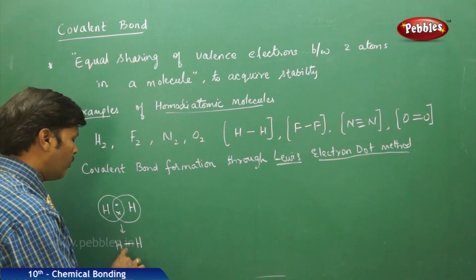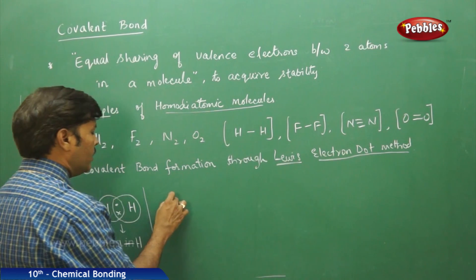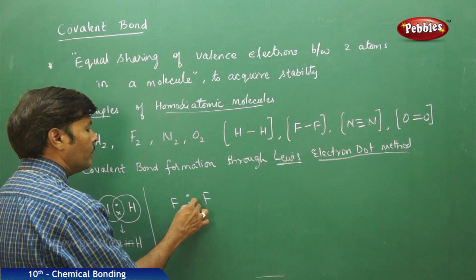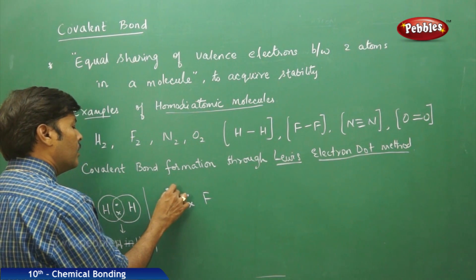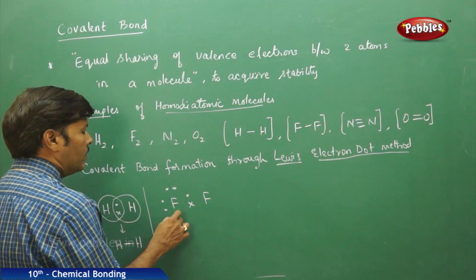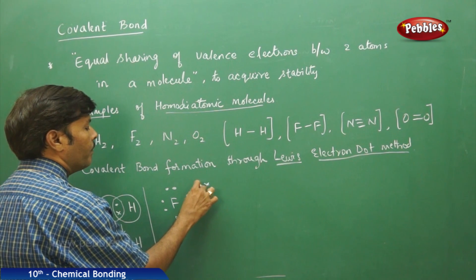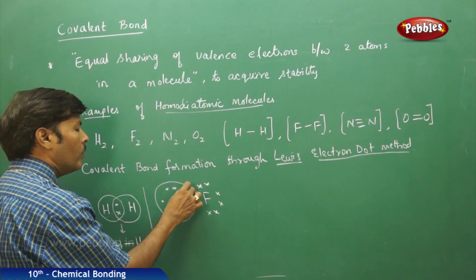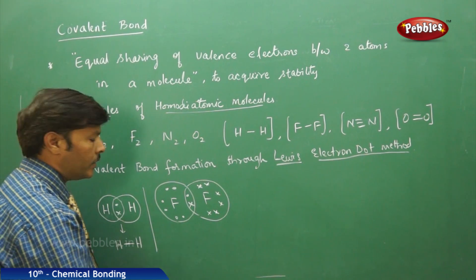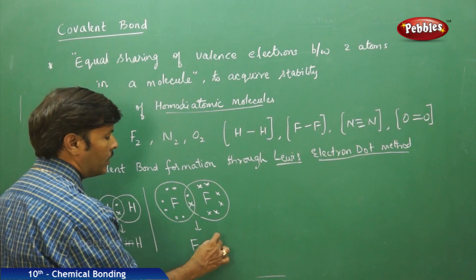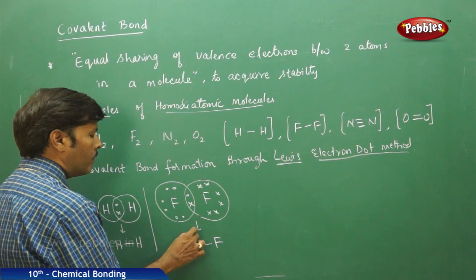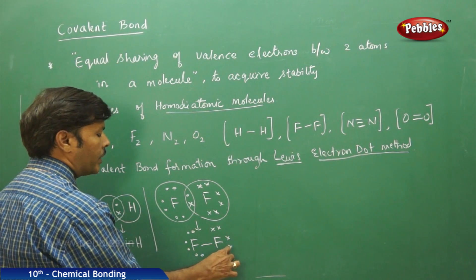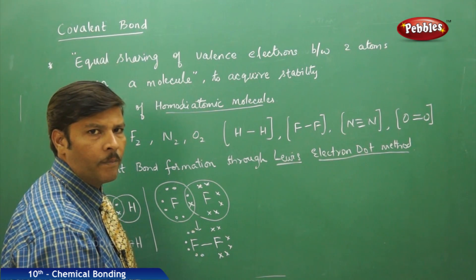For fluorine, each fluorine has seven valence electrons. Each fluorine will try to share one electron, leaving behind the remaining six valence electrons as non-bonding pairs. Both fluorine atoms share equally one electron with each other. The fluorine molecule has one single covalent bond, with each fluorine having three non-bonding pairs of electrons, but a covalent bond is formed successfully between the two fluorine atoms.